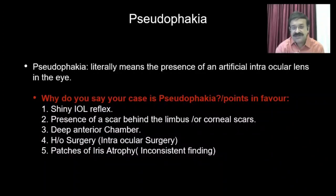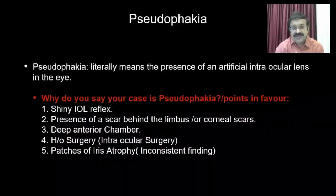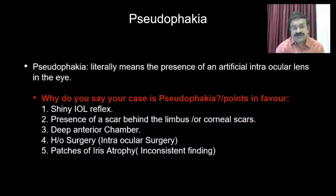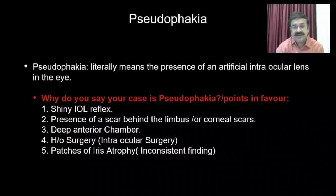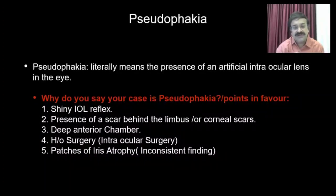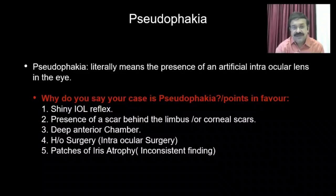Pay special attention to the presence of a scar in the cornea these days, because most surgeries are phacoemulsification. In this case you will have two scars in the limbus, about four clock hours apart, with another larger scar in between — that is the main portal of entry — and the others are the side ports. Another point in favor is the presence of a deep anterior chamber, as pseudophakia always produces an anterior chamber deeper than a phakic eye.